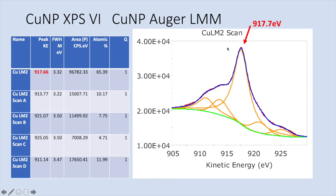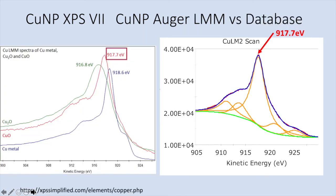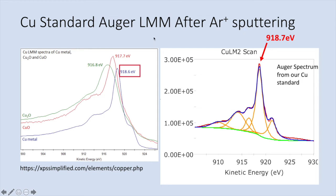Let's go to the Auger OJ peak. Fitting the OJ from the copper nanoparticle gives a peak at 917.7 eV — an exact match to the database. We don't have any component at 916 eV. This also matches the OJ spectrum from our copper standard. The OJ peaks are more prominent here, and we have a pretty good OJ spectrum overall.